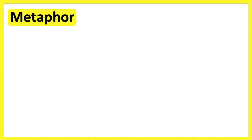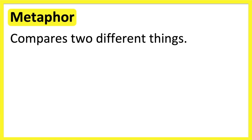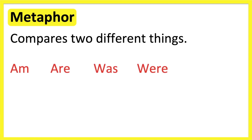A metaphor compares two different things. This includes objects, ideas, feelings, or thoughts. We say that something is something else. Remember that we can also use other forms of the verb 'to be' — for example, am, are, was, and were.